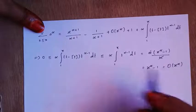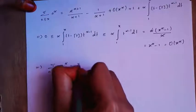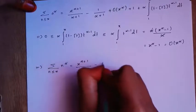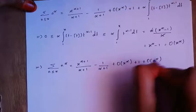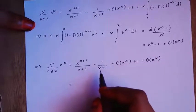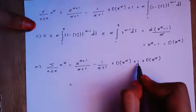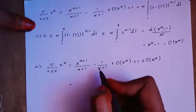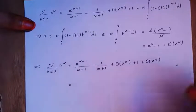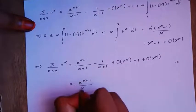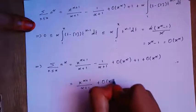Replacing back, we get: sum over n ≤ x of n^α equals x^(α+1)/(α+1) minus 1/(α+1) plus big O(x^(α+1)) plus big O(x^α). For α ≥ 0: if α equals 0, the plus 1 and minus 1 cancel; if α > 0, the term 1/(α+1) is negligible. So we neglect it, and both big O terms combine to big O(x^α). Thus the sum over n ≤ x of n^α equals x^(α+1)/(α+1) plus big O(x^α). Hence the proof.